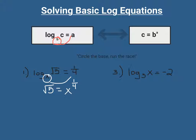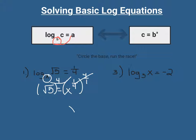Think back to the last unit when we were working with exponents. To get rid of a fractional exponent, we raise both sides of the equation to the reciprocal power. The reciprocal of one-fourth is four over one, so we raise both sides to the fourth power. These cancel off, leaving us with x, and then radical five to the fourth. Radical five squared is just five, and since we're raising it to the fourth, that's like squaring it again. Five squared gives us 25.